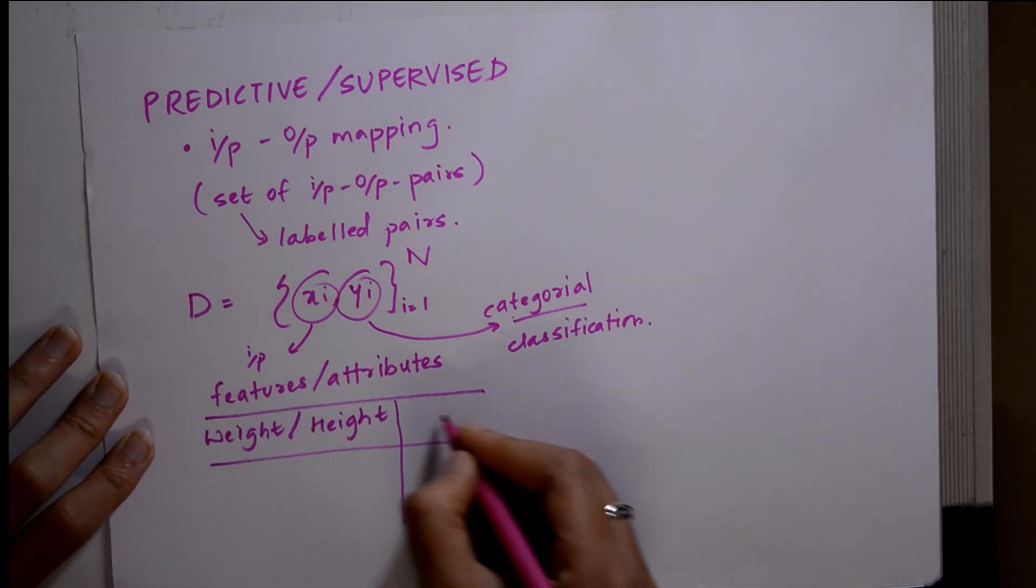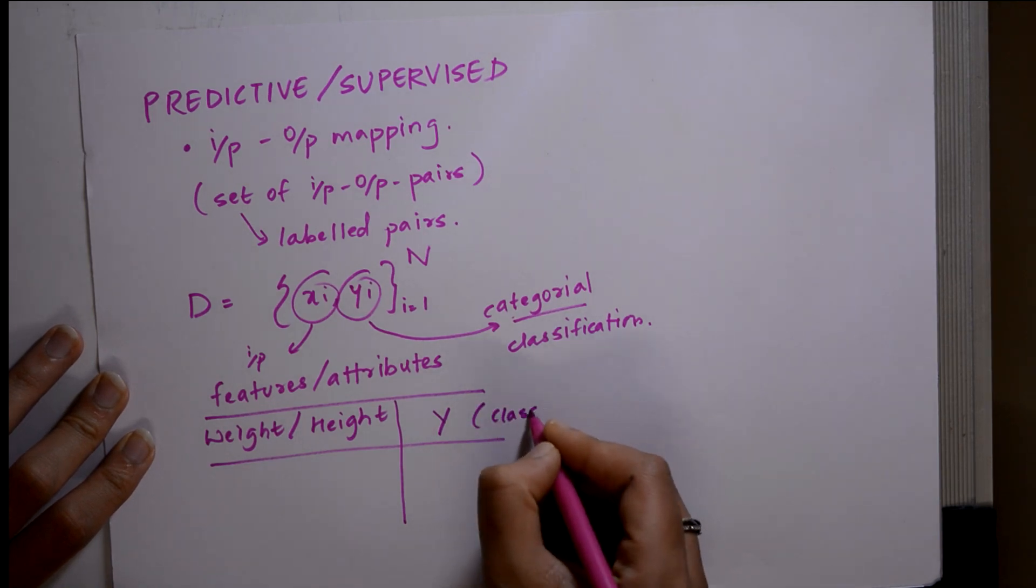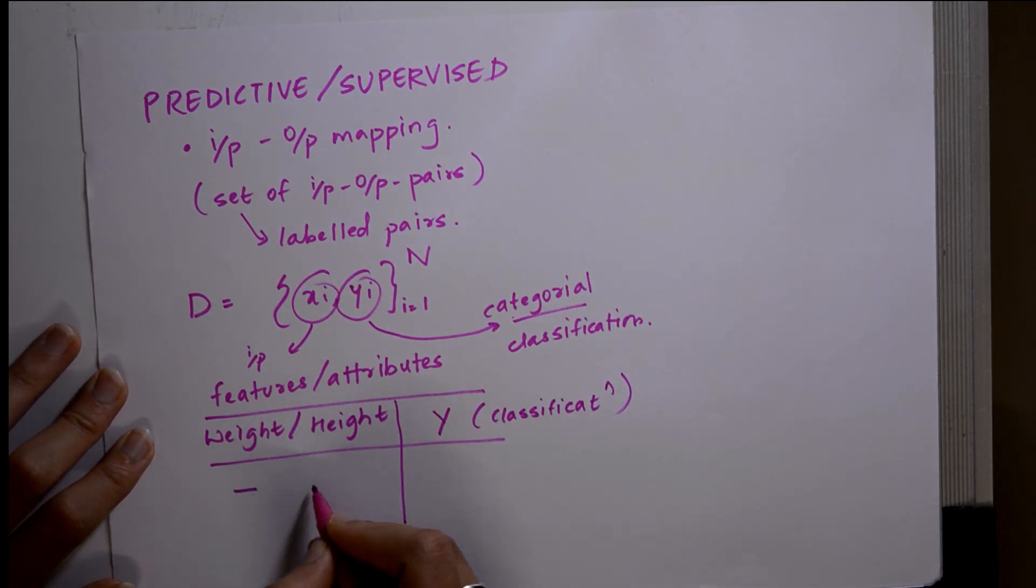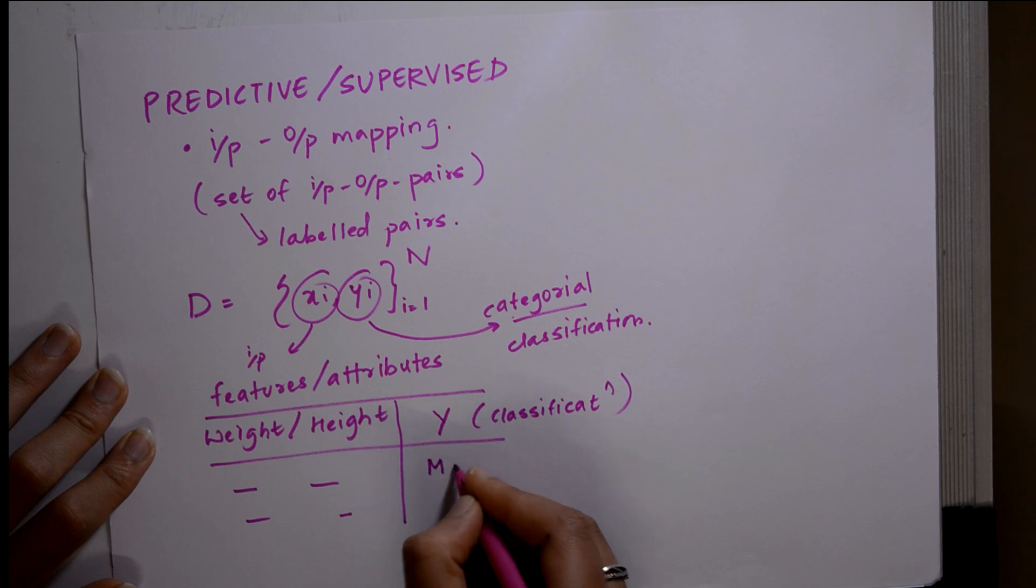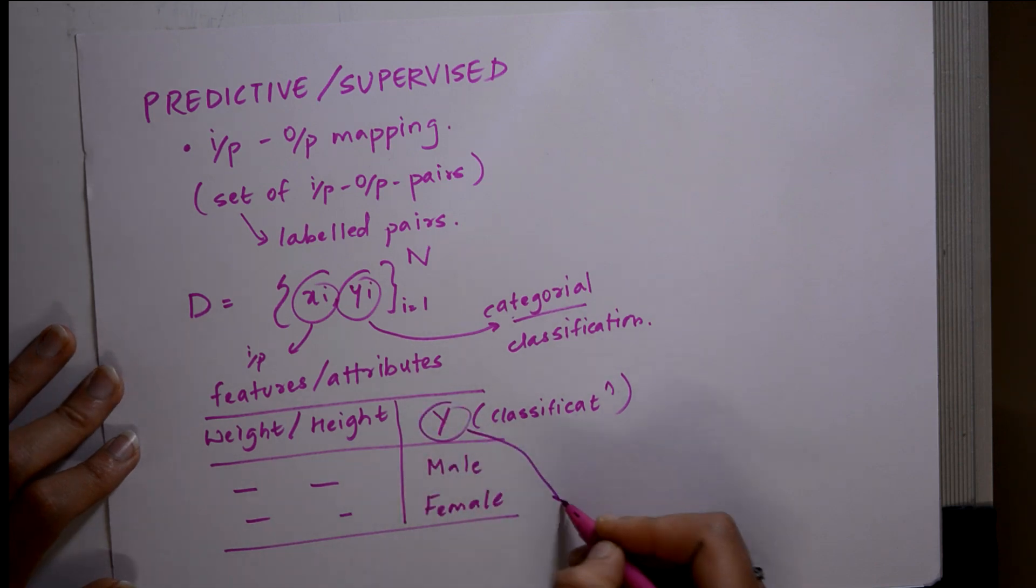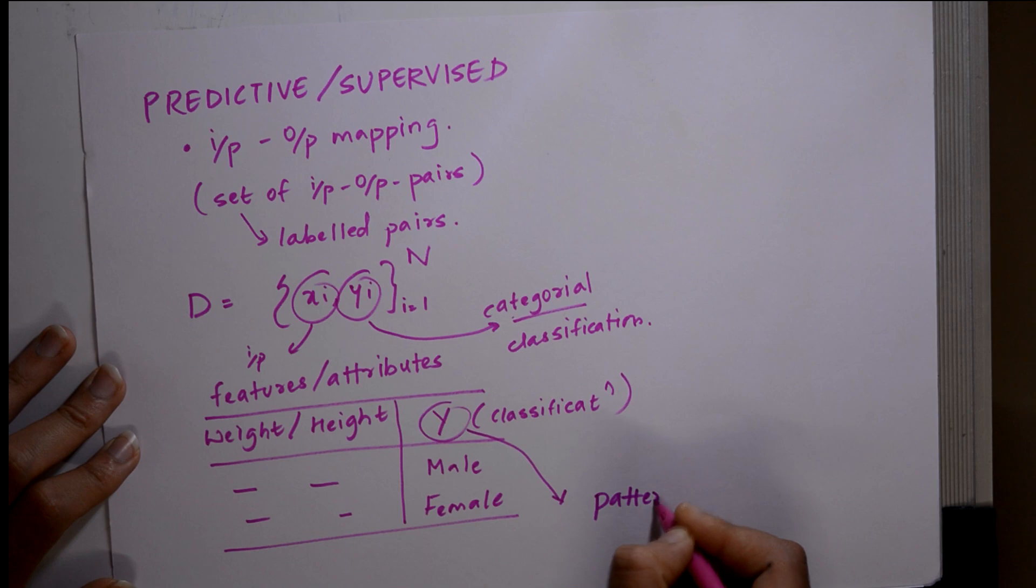And then in output, that is y, you are having classification. So depending upon the input, weight and height, you are going to classify whether it is a male or a female. This is how we can say that predictive or supervised learning works. Y can also be used in pattern recognition.